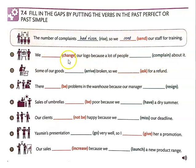Remember, red is for past simple. Green is for past perfect. Then when you come back, I'm going to play the audio and show you the answers.